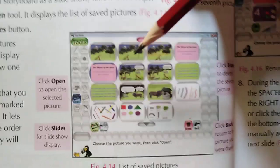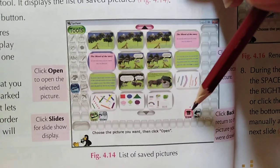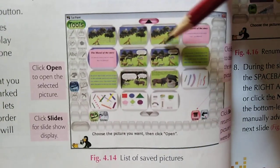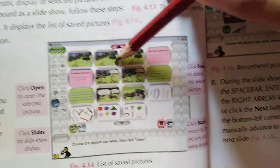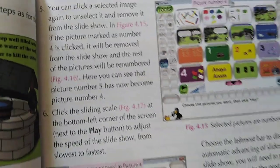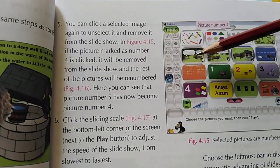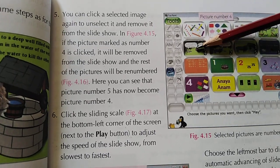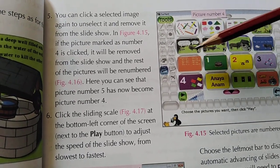For example, if you have selected this picture, then click the Erase button and it will be deleted from the slideshow screen. If you have selected any other picture and want to deselect it, just click on it. It will be deselected and the numbers will change accordingly.